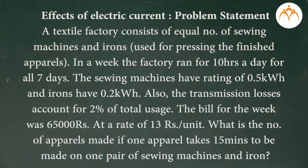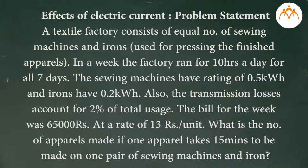Let us solve this problem from the topic of electricity. A textile factory consists of equal number of sewing machines and irons. In a week the factory ran for 10 hours a day for all 7 days. The sewing machines have a rating of 0.5 kWh and irons have a rating of 0.2 kWh. The transmission losses account for 2% of total usage. The bill for the week was 65,000 Rs at a rate of 13 Rs per unit. What is the number of apparels made if one apparel takes 15 minutes to be made on one pair of sewing machine and iron?